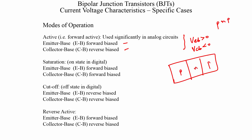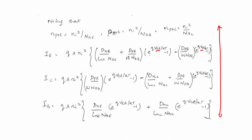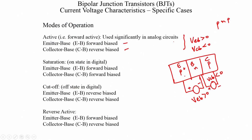If the emitter-base junction is forward biased, then VEB is greater than 0. If the collector-base junction is reverse biased, then VCB is less than 0. These voltages all appear in exponential terms. Since VEB > 0, the exponential of qVEB/kT is much greater than 1. And since VCB < 0, the exponential qVCB/kT is much less than 1.